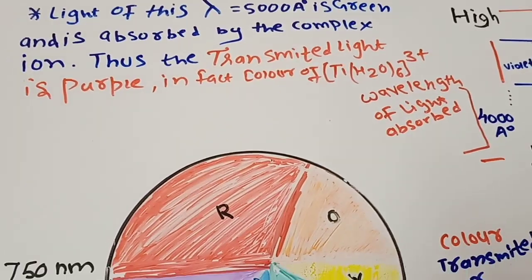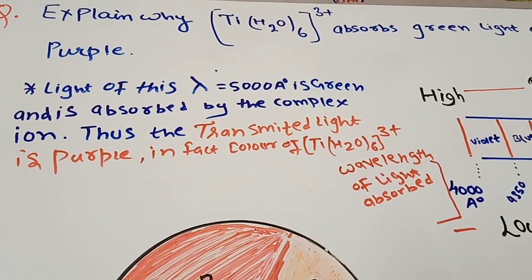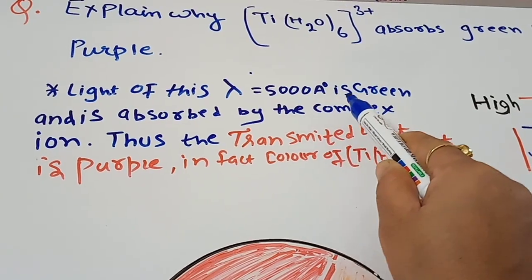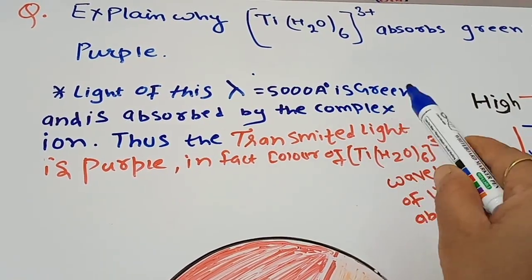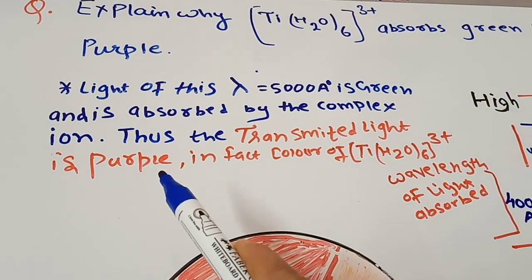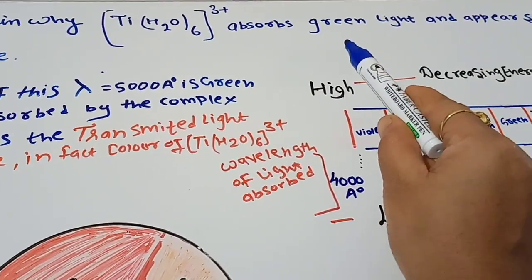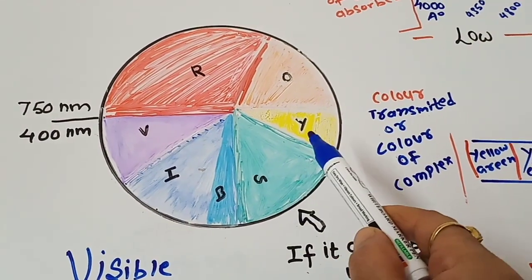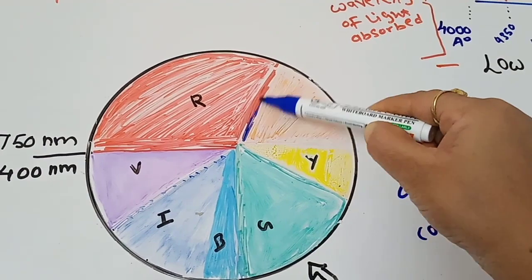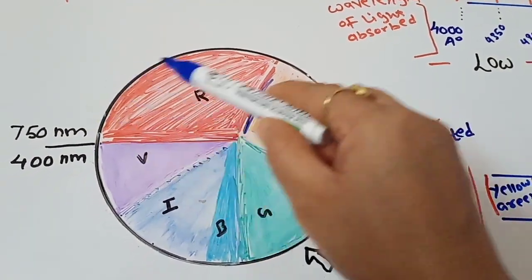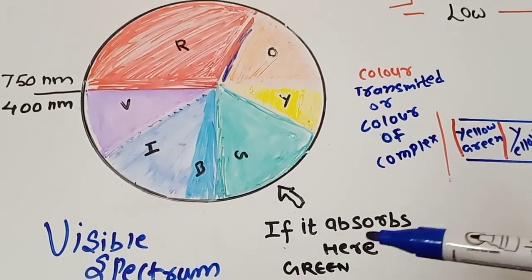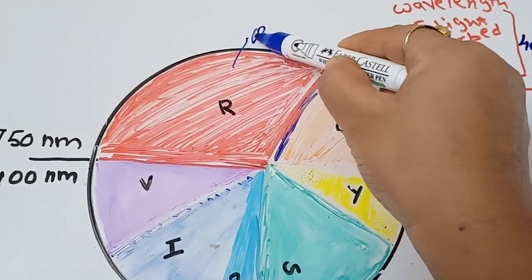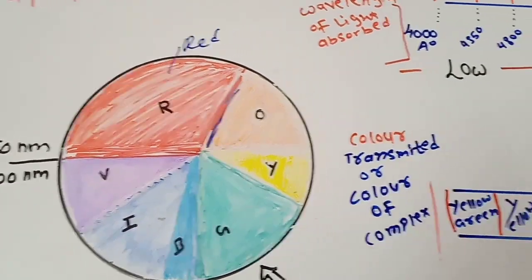When one electron is promoted from the T2g orbital to the Eg orbital — a D-D transition — the complex absorbs light at 5000 Ångström, which is in the green region of the visible spectrum. Therefore, the complementary color of green is purple, and this ion appears purple. The colors of the visible spectrum (VIBGYOR) form a continuous spectrum.